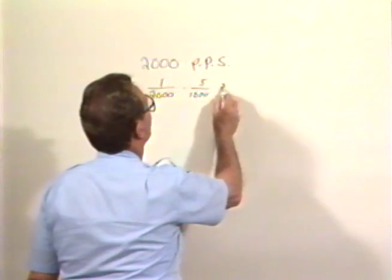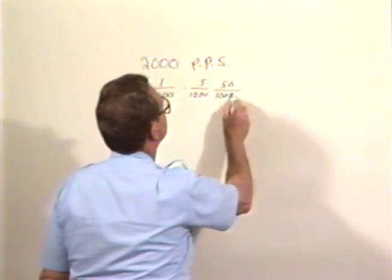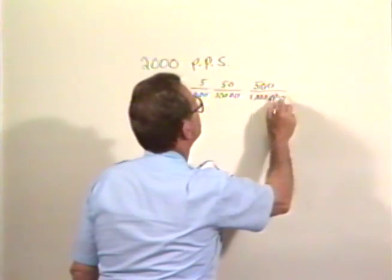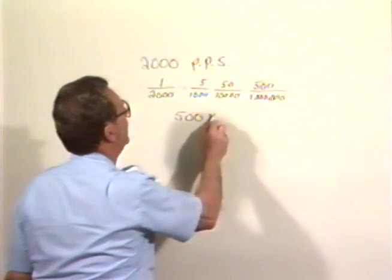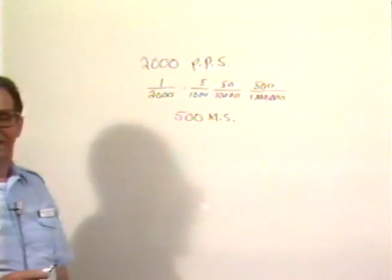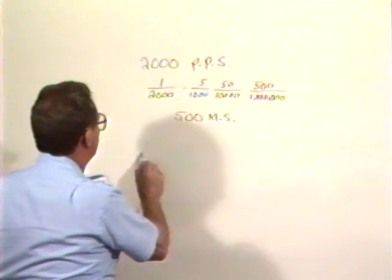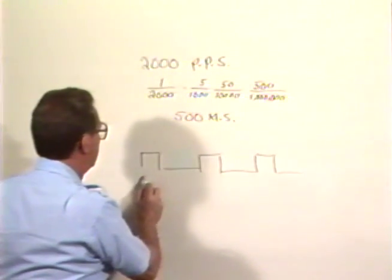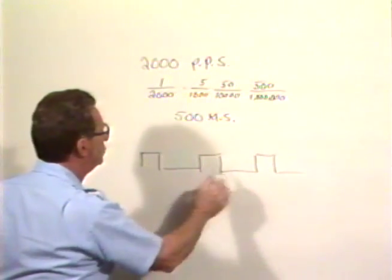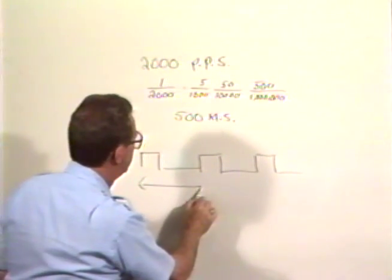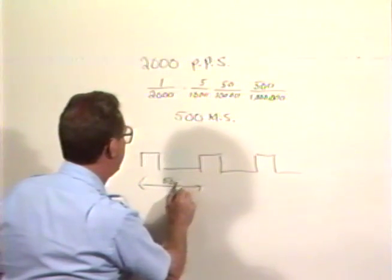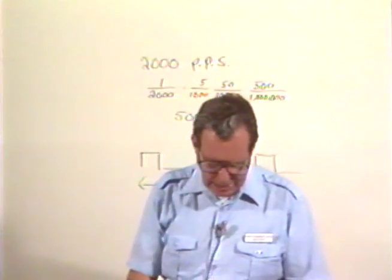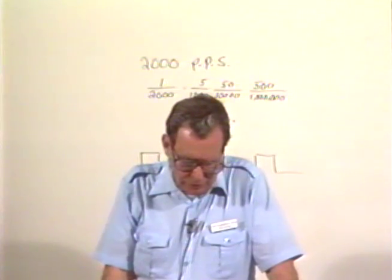One two-thousandth of a second is the same as five ten-thousandths, or fifty hundred-thousandths, or five hundred one-millionths — and five hundred one-millionths is 500 microseconds. Now let me draw a little diagram here which shows pulses and silent periods. Of course, this is not to scale.